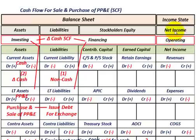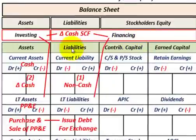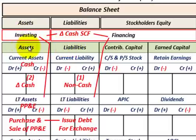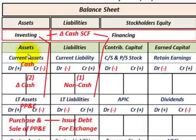The operating section would be tied to net income on the income statement. For our example here, we're going to look at the interaction between our liabilities — financing through a liability — and investing in a piece of equipment. We're going to be looking at two cases: actually purchasing some equipment, and also selling some equipment.